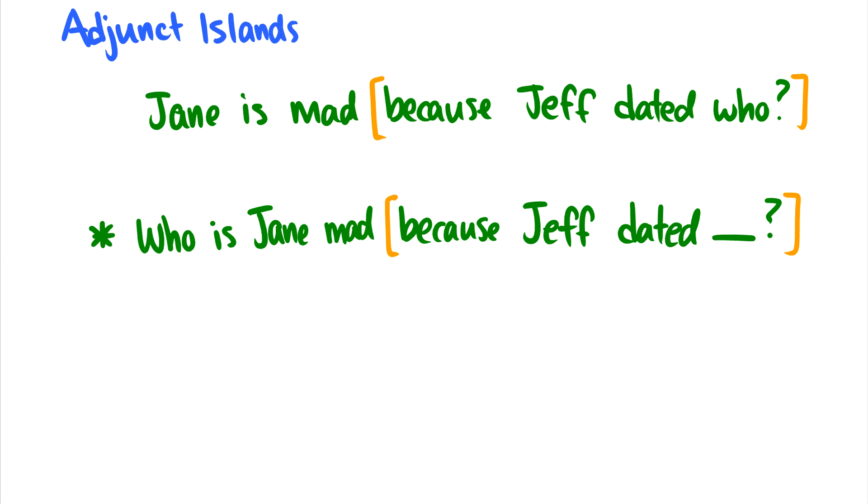Another type of island are the adjunct islands. So here's a nice sentence: Jane is mad because Jeff dated who? And in this case we don't know who Jeff dated, but Jeff dating someone made Jane mad. So let's move this who out and make a question with it. Who is Jane mad because Jeff dated? This doesn't really make any sense. So this doesn't have the same meaning as Jane is mad because Jeff dated who? Instead, who is Jane mad because Jeff dated doesn't capture the same meaning. In fact, it sounds pretty ungrammatical.